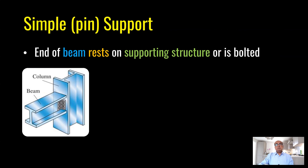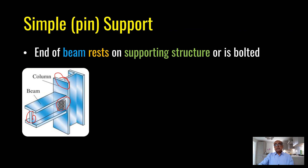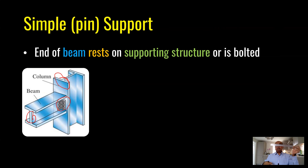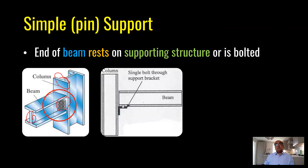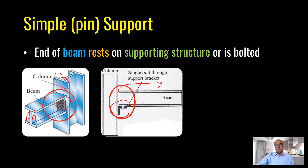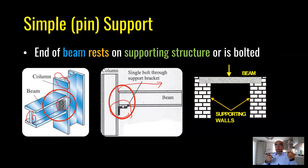In a simple or pin support, the web of the beam is connected to the flange of the column with a leg angle, providing a pin support. A key feature is a small gap of about 10 mm between the end of the beam and the column, which allows rotation. A steel beam resting on a clip angle and bolted to the column — with a visible small gap — also allows rotation. If a beam simply rests on walls, it also provides a pin support.